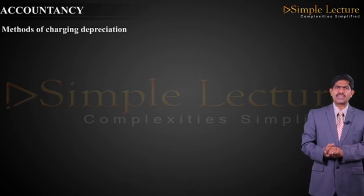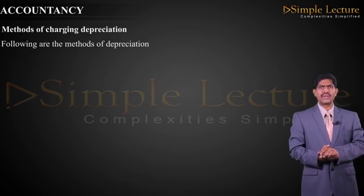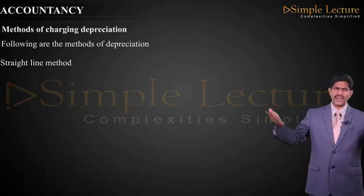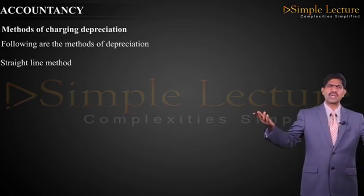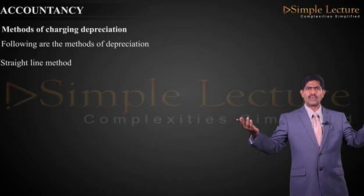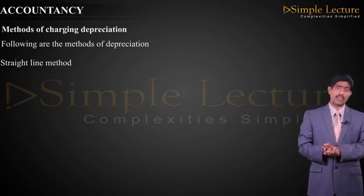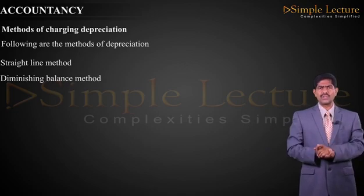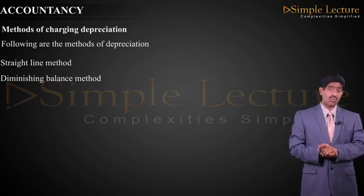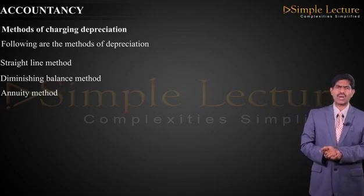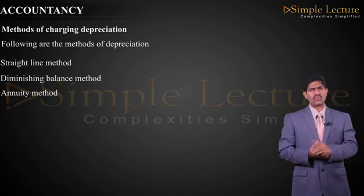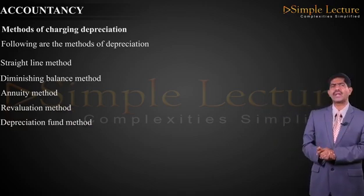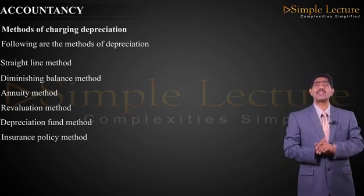Methods of charging depreciation: First, straight line method — also known as original cost method, book value method, or fixed installment method. Next, diminishing balance method — also called reducing balance method or written down value method. Third, annuity method. Fourth, revaluation method. Fifth, depreciation fund method. And last, insurance policy method.